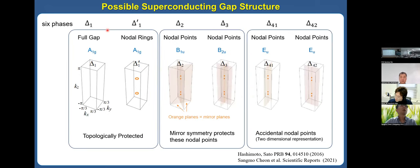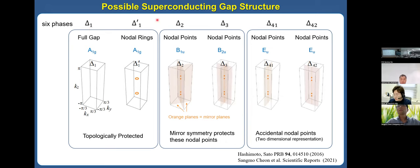Once we have these six possible superconducting pairings, we studied the possible superconducting gap structures. There are six pairings showing interesting phases. For example, Δ₁ shows a fully-gapped gap structure — a fully-gapped superconductor. For Δ₁′, it has a nodal link in the Brillouin zone — a nodal superconductor. Interestingly, for Δ₂ and Δ₃, they show nodal points along the Γ-axis. These nodal points are protected by the mirror plane — the mirror symmetry protects these nodal points. And there are also accidental points.